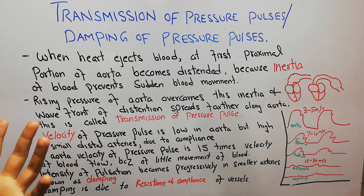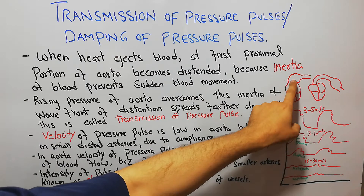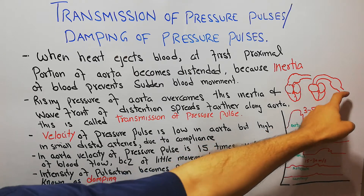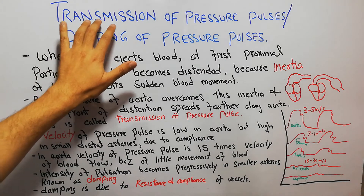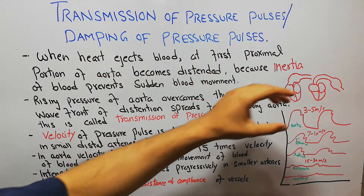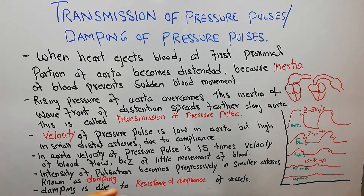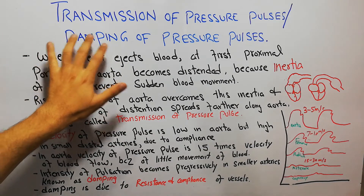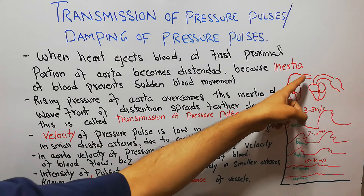The difference between systolic and diastolic pressure is known as the pulse pressure. That pulse pressure generated at the proximal portion of the aorta is transmitted to the peripheral or distal portions of the blood vessels — that is known as the transmission of the pressure pulses. The intensity of these pressure pulses decreases as it travels into peripheral vessels, and that gradual decrease in intensity is known as damping of the pressure pulse.